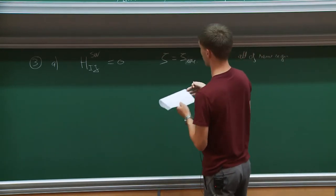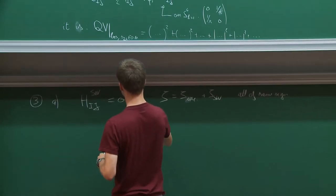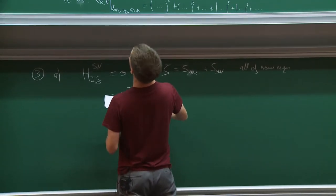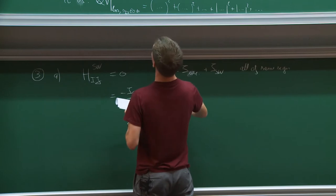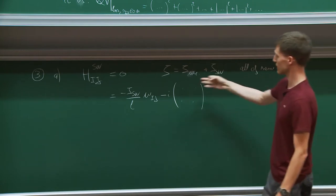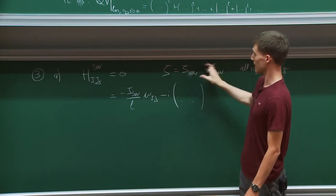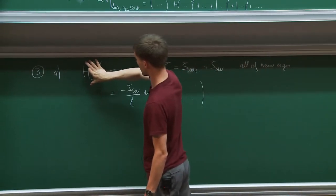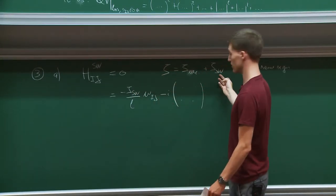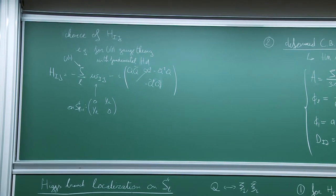This condition, written out, is the same as before but with zeta replaced by zeta_SW. I defined H_ij^SW as that part of H_ij which multiplies one of these two parameters. So I just added zeta_vac over L times W_ij. The reason for this split will become clear shortly.